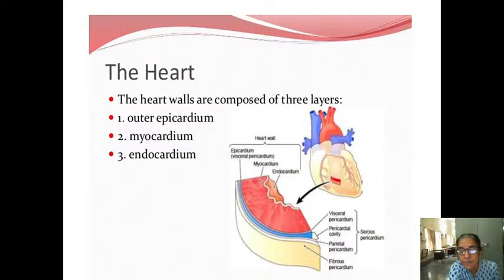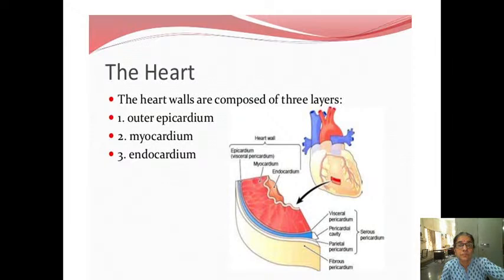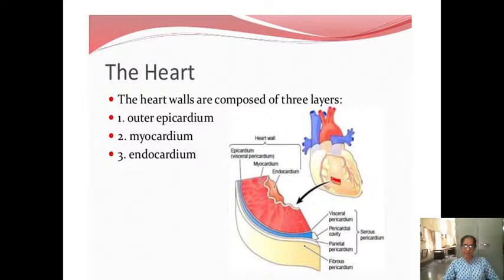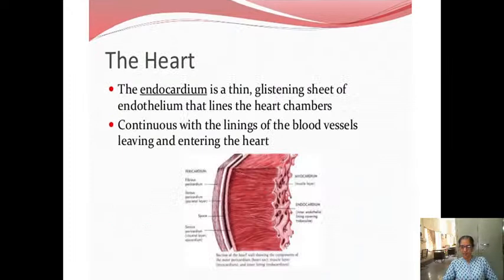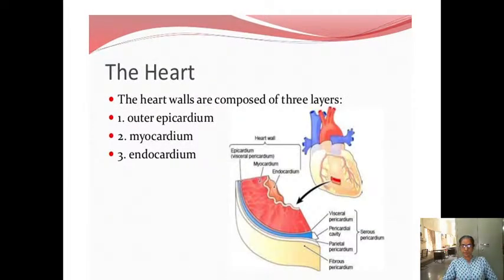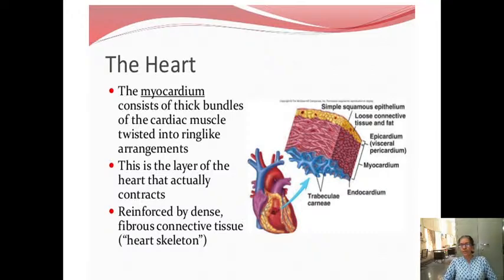The parietal layer and the visceral layer, with the pericardial cavity in between — this is all your epicardium or serous pericardium. The outer epicardium, myocardium, and endocardium make up the heart wall. The myocardium has got the muscle. The thick layer you can see is the myocardium.